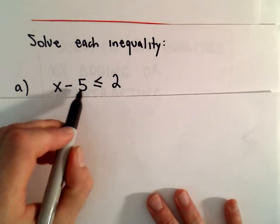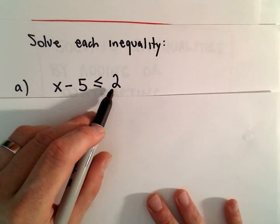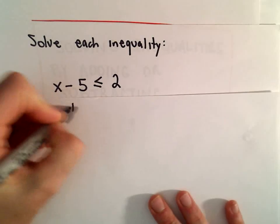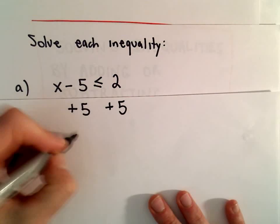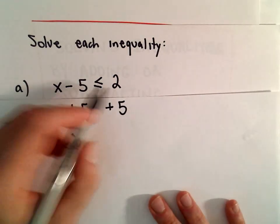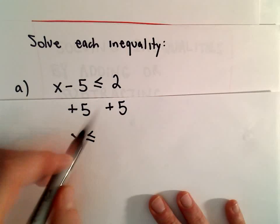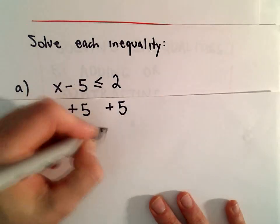Okay, for this one we have x minus 5 less than or equal to 2. All we have to do is add 5 to both sides, and we'll be left with x on the left side. Our less than or equal to sign stays there, and 2 plus 5 will give us 7.